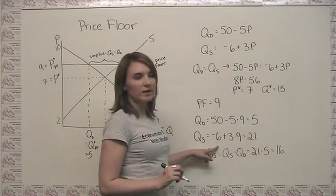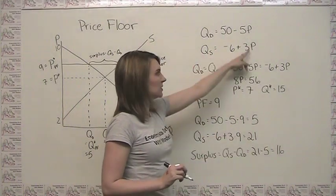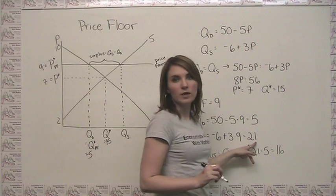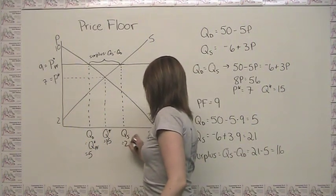Our quantity supplied at a price of 9 is just negative 6 plus 3 times 9 from this equation here, which is equal to 21. So our quantity supplied at our price floor of 9 is 21.